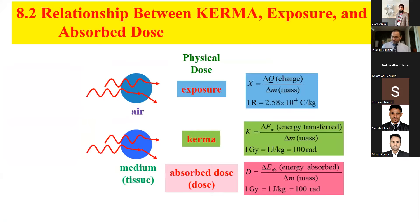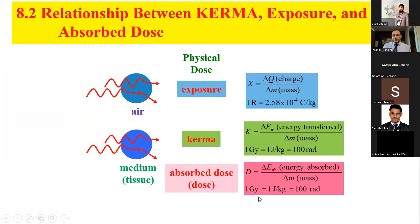In summary: exposure is charge per unit mass (1 roentgen = 2.58 × 10⁻⁴ C/kg); kerma is energy transfer per unit mass (unit: gray); absorbed dose is energy absorbed by the medium divided by mass, also in gray.